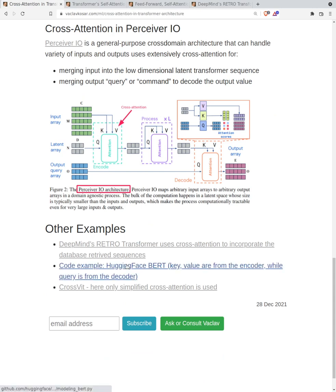You can have a look at the code - I've linked to the code in HuggingFace BERT and cross-attention. What you can do is look at Perceiver IO to understand what's happening, how cross attention is used there.